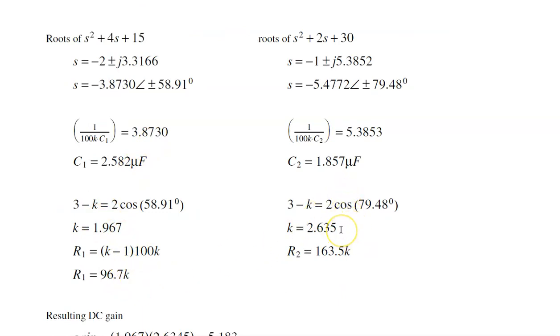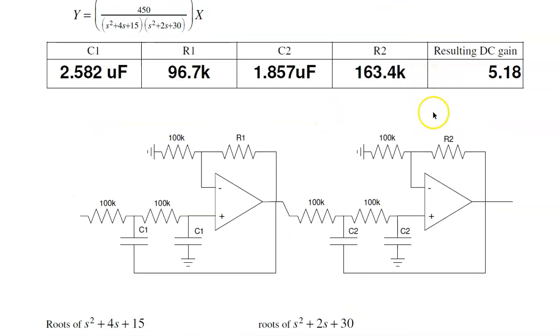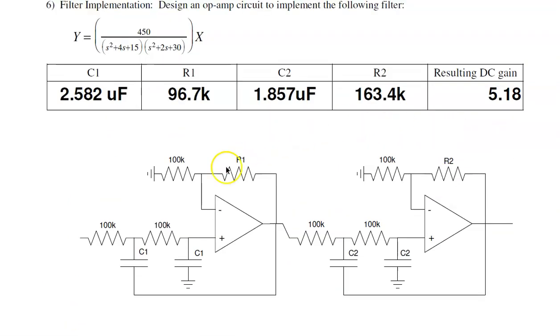For the second one, I want the gain to be 2.63. So R1 is 163k. So there's your circuit. And then the DC gain is going to be 1.96 times 2.63 gives you 5.18. That's quiz number 2 for ECE 321.